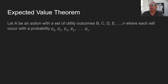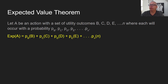So there's a probability that B will happen, a probability that C will happen, a probability that D will happen, and so on. The formula says the expected value of action A equals the weighted average of those probabilities times those outcomes. Here it is instantiated one more time for a bunch of outcomes B through N.